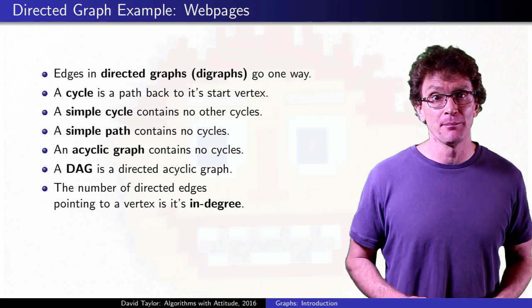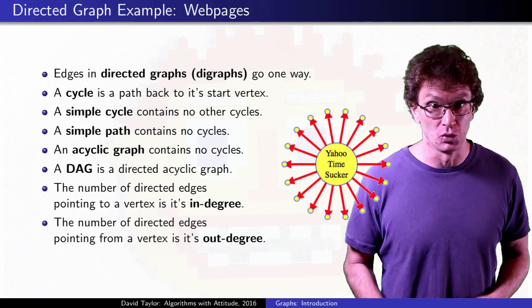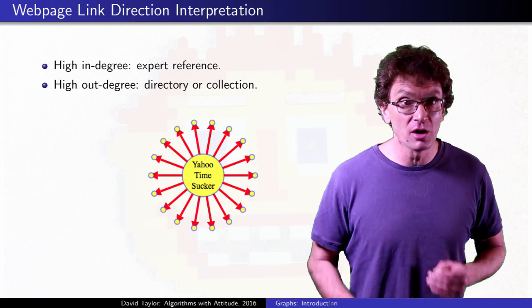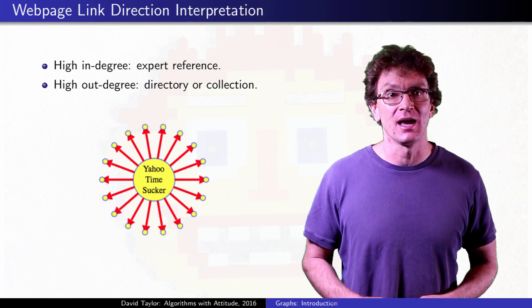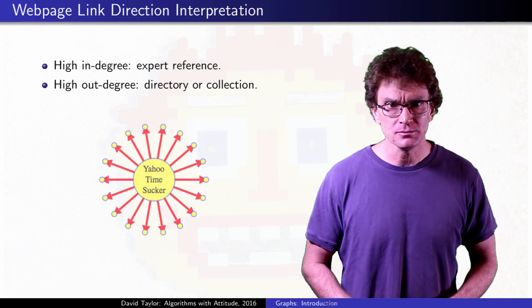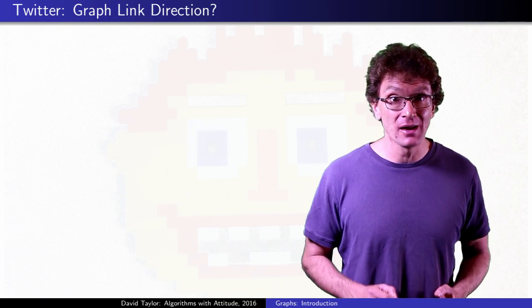On the other hand, think about pages with a high out-degree, like Yahoo, assuming that's still around. The number of edges out indicates it's probably a directory or a collection of some sort.